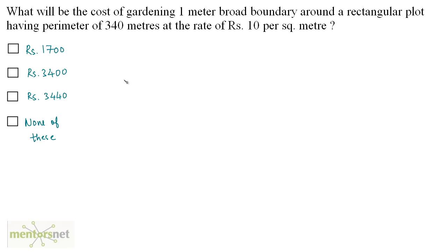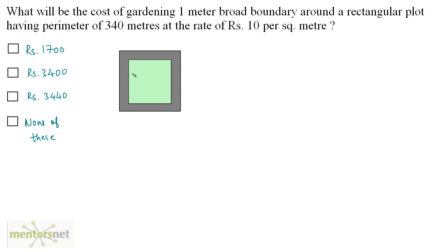What will be the cost of gardening a 1 meter broad boundary around a rectangular plot having a perimeter of 340 meters at the rate of 10 rupees per square meter? Assume the inner green rectangle is the garden with a boundary of 1 meter around it. Let the length of the inner rectangle be L and the breadth be B. The length of the outer rectangle will be L plus 2, and the breadth will be B plus 2.